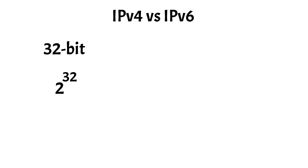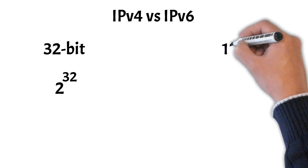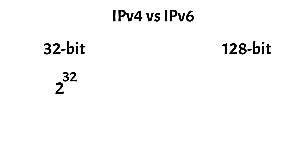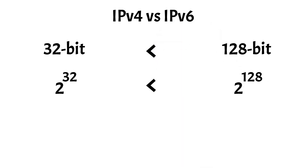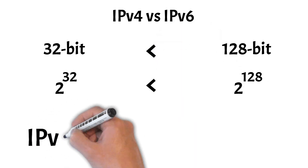In contrast, IPv6 addresses are 128-bit alphanumeric labels written in hexadecimal format, providing an almost limitless number of unique addresses. This expansion was necessary due to the rapid growth of internet-connected devices, which exhausted the available IPv4 addresses.